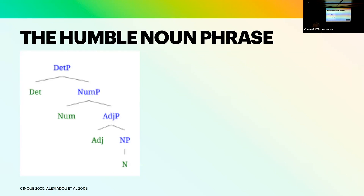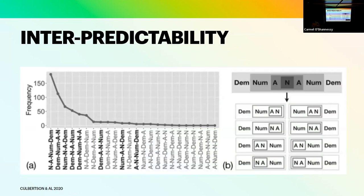If we just take these four elements — the determiner, the number, the adjective, and the noun — there are 24 different ways you can arrange them in a linear output. Of those 24, as is widely known from many studies, eight of them occur very frequently. Those eight have a pattern whereby the adjective is always at least equally closest to the noun, the number is not closer than the adjective, and the demonstrative is not closer than the number. You can flip everything as long as it obeys that general hierarchy, giving you these eight widely attested orderings compared to the other 16 that are relatively rare.